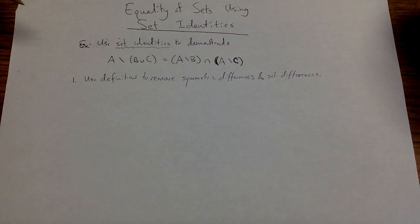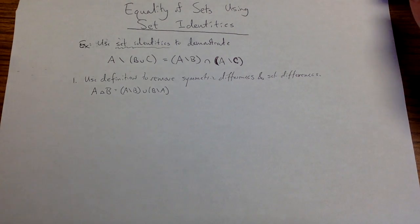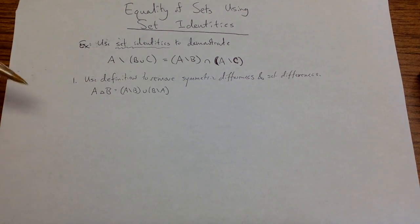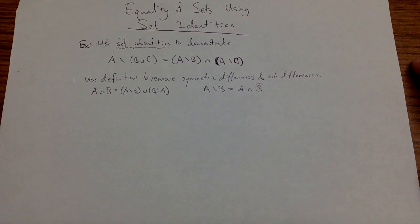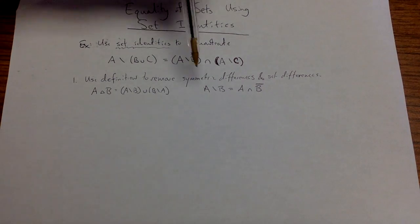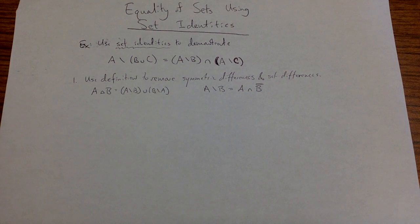The first step I'm going to do is use definitions to remove symmetric differences and set differences. The definition of symmetric difference A and B is the union of the difference between A and B and the difference between B and A. Then also, I'm going to say that the difference between A and B is A intersect the complement of B.